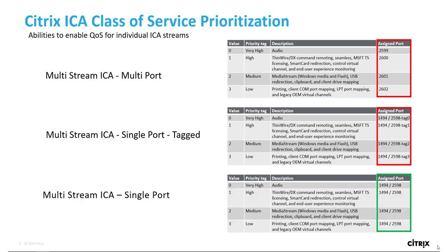Now, with Citrix SD-WAN single-port multi-stream ICA Auto-QoS feature, no configuration is required on the Delivery Controller, routers, or firewalls, and only a single checkbox needs to be selected to enable it in the SD-WAN environment globally.